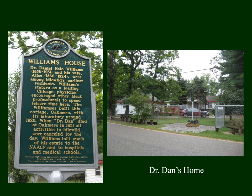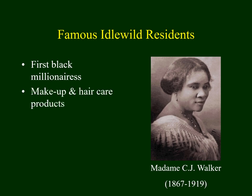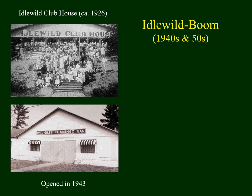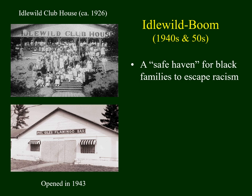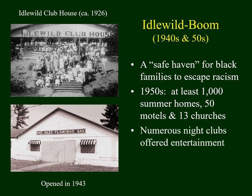Dr. Dan's home is still standing — it's a private residence today. Another important Idlewild property owner was Madam C.J. Walker, the first black millionaire. She made a fortune developing beauty products for African Americans, like makeup and hair care products, and she owned property and lived at Idlewild. By the 1950s, Idlewild was a happening place where African Americans could enjoy themselves without worrying about racism and discrimination. There were at least a thousand summer homes, 50 hotels, and over a dozen churches, and it was well known for nightclubs and live entertainment.